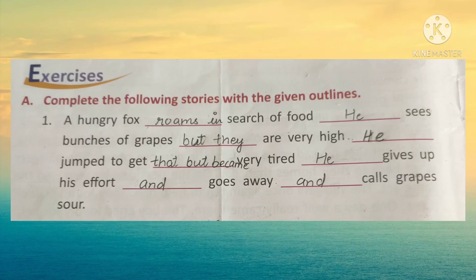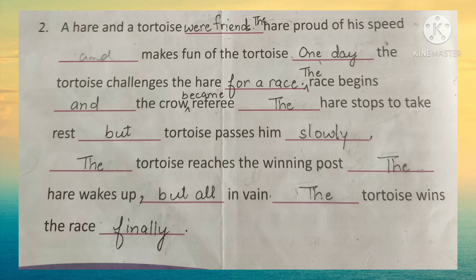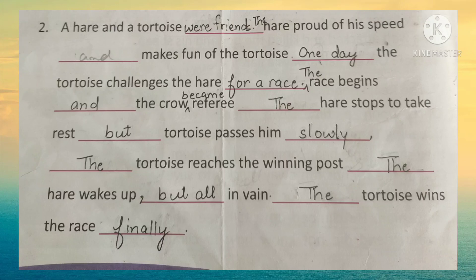Now let's complete the second story. A hare and a tortoise were friends. The hare was proud of his speed and made fun of the tortoise. One day the tortoise challenged the hare for a race. The race begins and the crow became the referee. The hare stops to rest but the tortoise passes him slowly and reaches the winning post. The hare wakes up but it is all in vain — the tortoise wins the race.